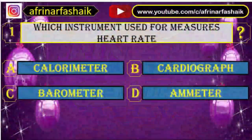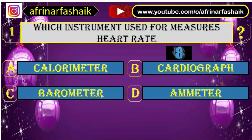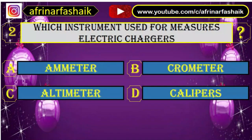Question number one: which instrument is used to measure heart rate? Your options are A. Calorimeter, B. Cardiograph, C. Barometer, and D. Ammeter. B. Cardiograph is the correct answer.